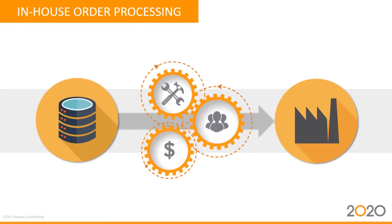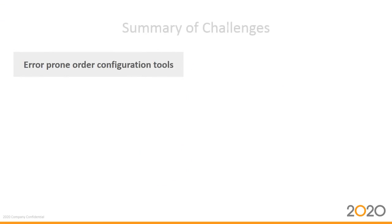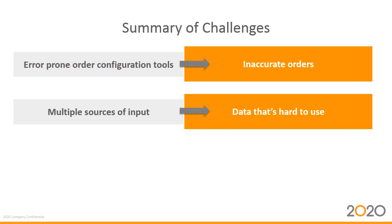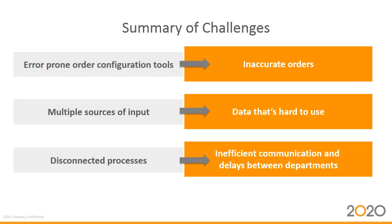Once the orders are in your system, there's still work to be done before they can be released to the production floor. You need to process them through multiple departments like customer service, finance, engineering, and potentially IT. All of these departments need to touch the orders in some way, like for credit checks, acknowledgments, and specials engineering. It's hard for each department to see what's coming, what they need to do next, and what they need to do tomorrow. To summarize: you have error-prone configuration tools that lead to inaccurate orders, multiple sources of input and different data formats leaving you with data that's hard to use, and disconnected processes resulting in inefficient communication and delays between departments.